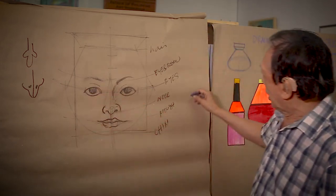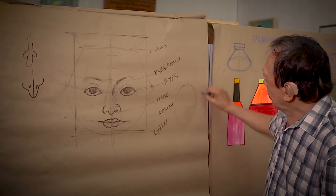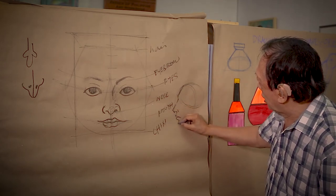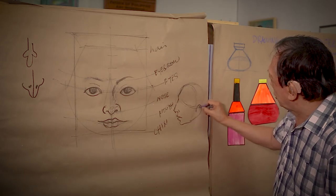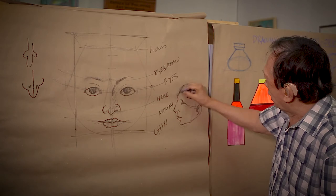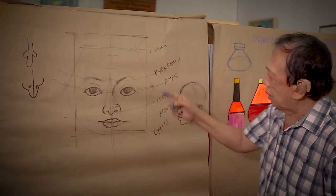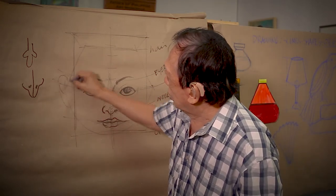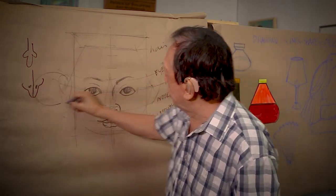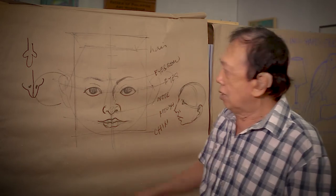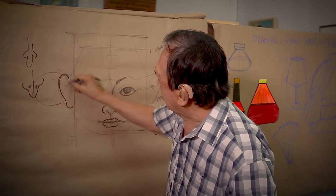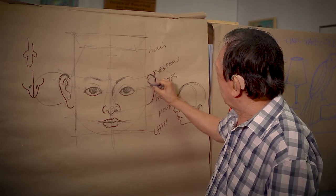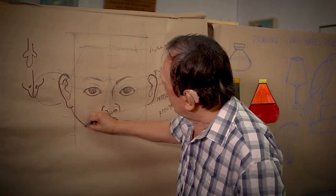Paano naman yung tenga? Pagka ang tao naka-side view, if the face is in side view, the ears will be in front view - malapad yung tenga pagka naka-side view. Pero pagka naka-front view yung mukha, yung tenga naka-side view. Hindi pwede na front view yung mukha, tapos front view rin yung tenga. Yung upper part ng tenga - pantay sa kilay. Yung lower part ng tenga ay pantay sa lower part ng ilong.